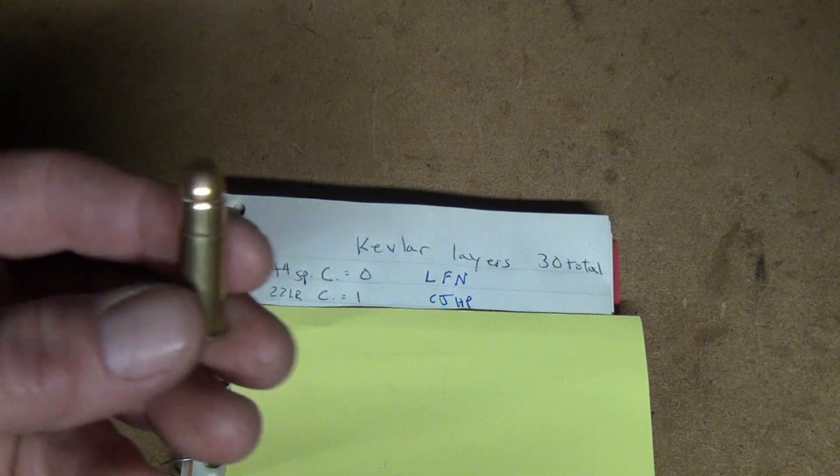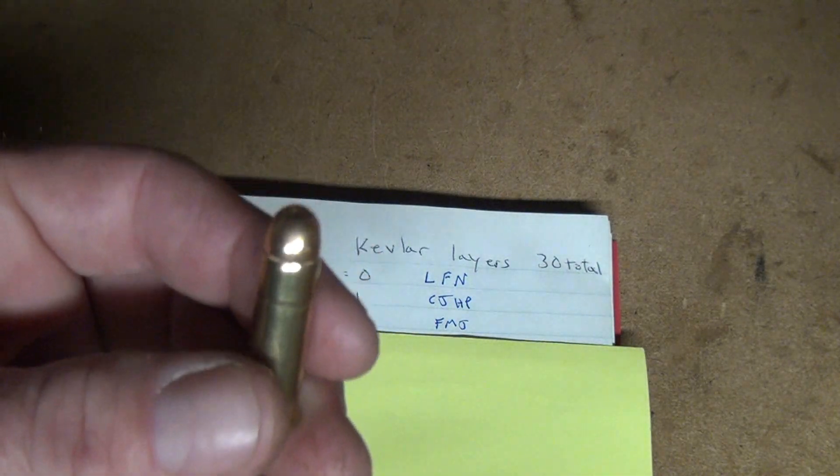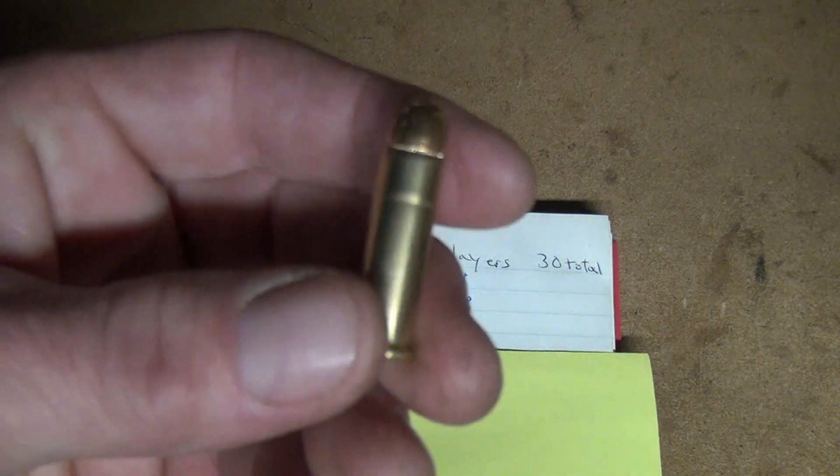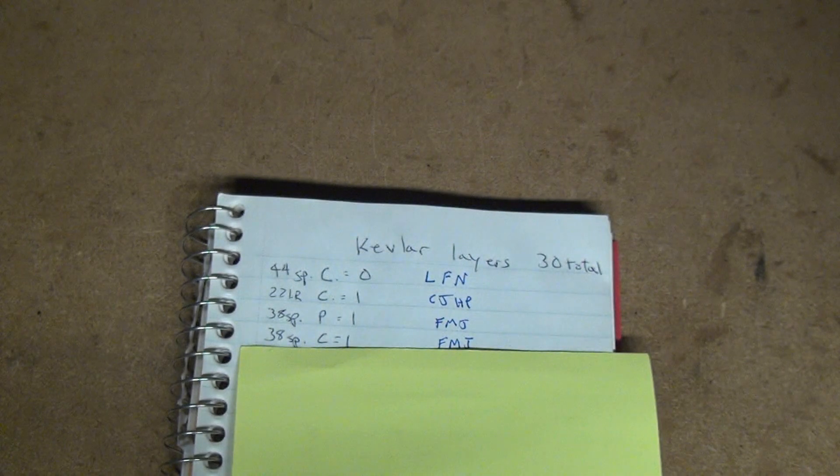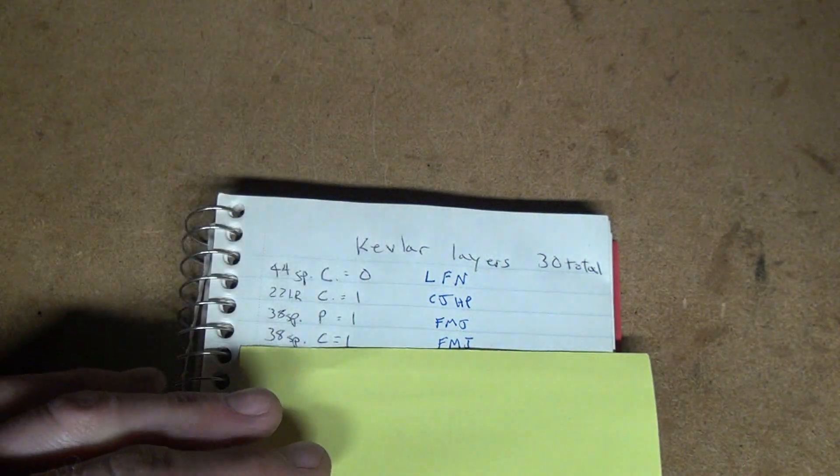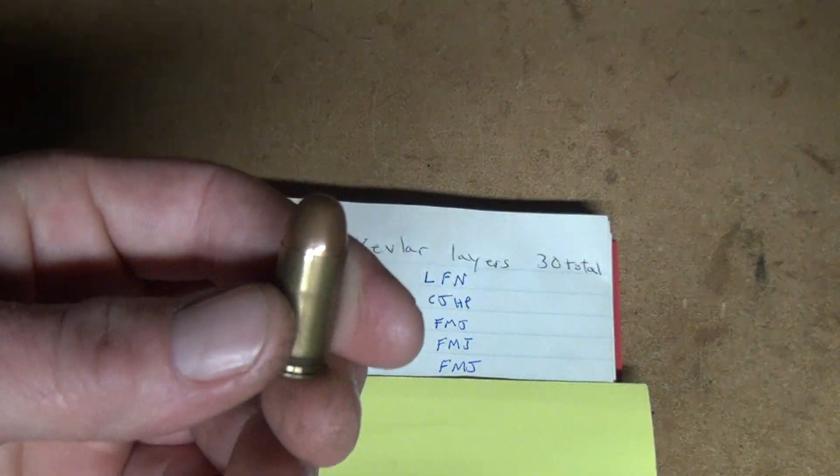The next one was the .38 Special pistol. That went through only one layer, that's it. Next was the .38 Special carbine. That also went through only one layer of Kevlar. Holy crap, I mean, totally impressed. Next was the .45 ACP. That went through only one level of Kevlar. Insane.